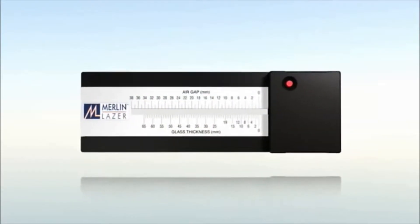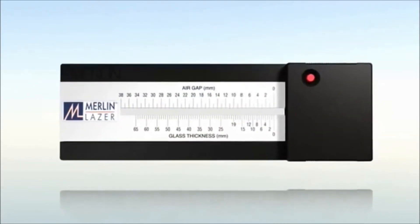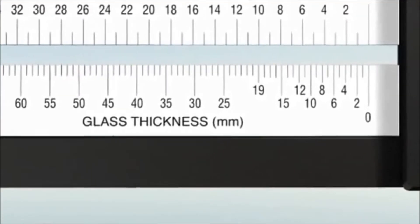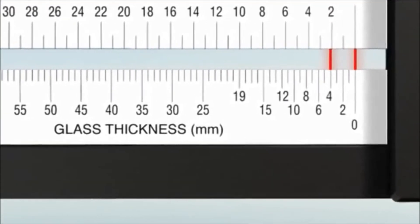The Merlin laser gauge is an easy to use tool with a user-friendly configuration. The glass thickness section on the bottom of the scale gives an instant reading of the thickness of the glass being tested.